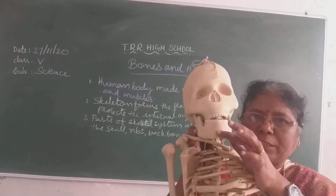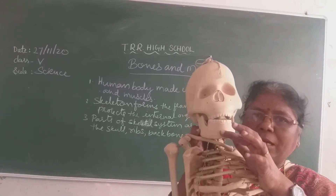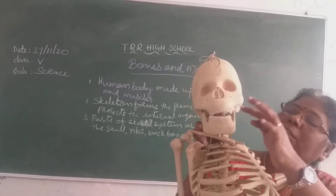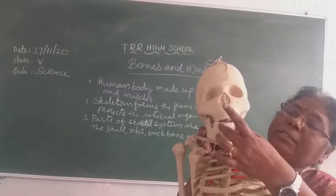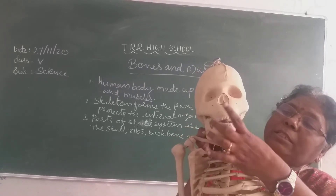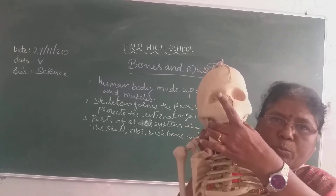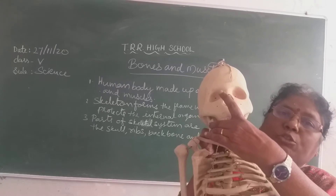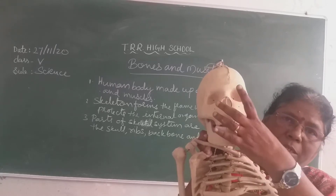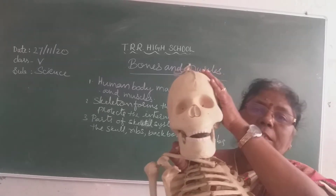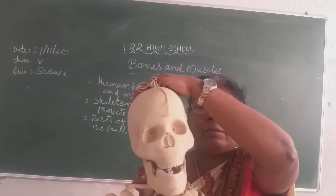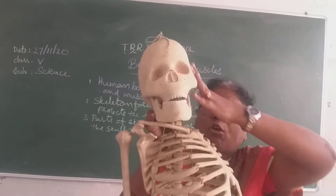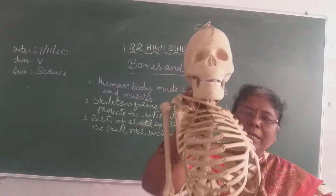The lower jaw is used for talking and for eating food. These are the teeth — these teeth are fixed in the jaw bone. This is what you call the jaw bone. So this is about the skull.